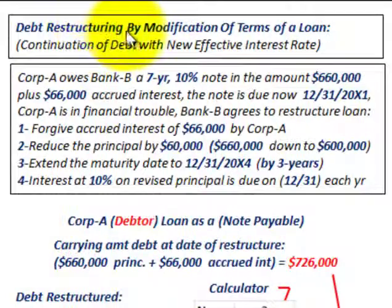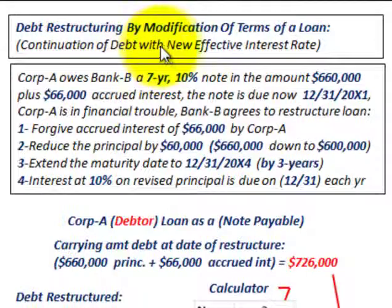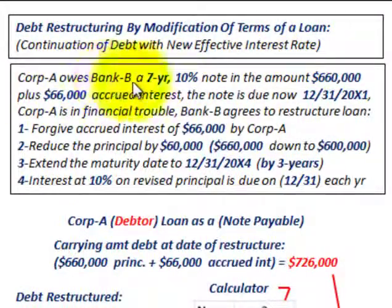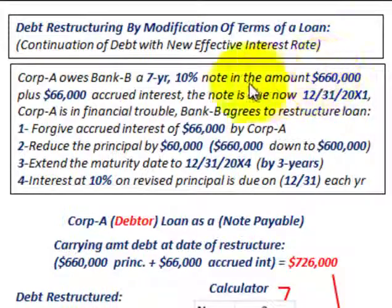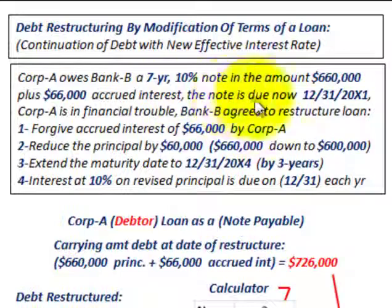Here we're going to be looking at debt restructuring by the modification of terms of a loan, and we're going to look at the continuation of debt with a new effective interest rate. For example, Corporation A owes Bank B a 7-year 10% note in the amount of $660,000, plus there's $66,000 of accrued interest on this note. The note is due on 12-31-20x1, that's the current date.